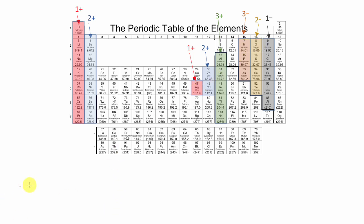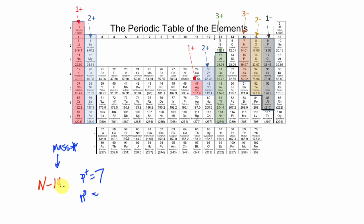Let's pick nitrogen. If we have nitrogen-14, that 14 is the mass number. From the periodic table, nitrogen has seven protons — that's its atomic number. Since the mass number is 14, the number of neutrons is 14 minus 7, which equals 7. Since there's no charge in the upper right-hand corner, the electrons are equal to the number of protons — also 7. So: seven protons, seven neutrons, seven electrons.